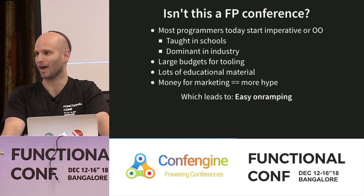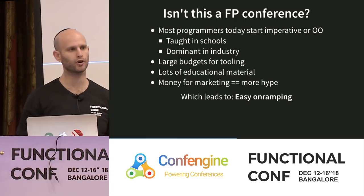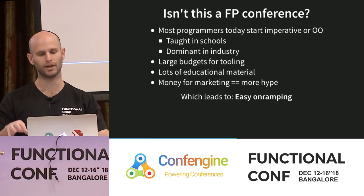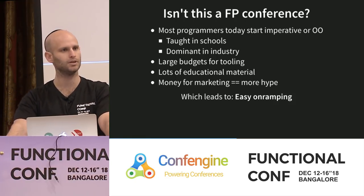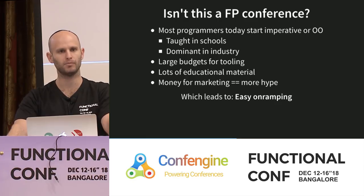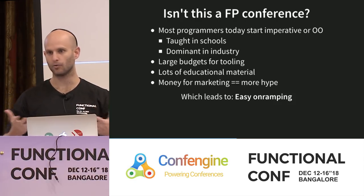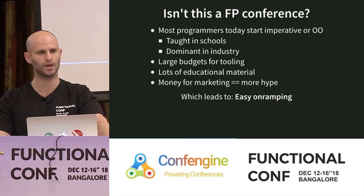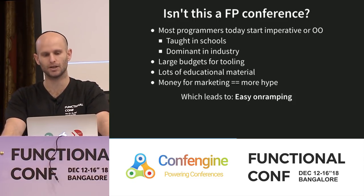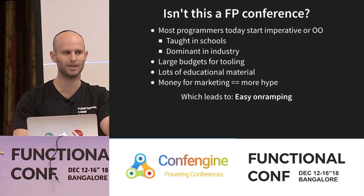This is a functional programming conference, so at some point I should talk about functional programming. How is all of this related? Most programmers today start off with either imperative or object-oriented programming — those are the languages taught in schools and dominant in industry. These languages usually have very large budgets for nice tooling that's easy to get started with, a lot of educational material, and a lot more money for marketing, generating more hype. As a result, it's very easy to on-ramp with these kinds of languages, and our initial evaluation is going to be biased toward them.